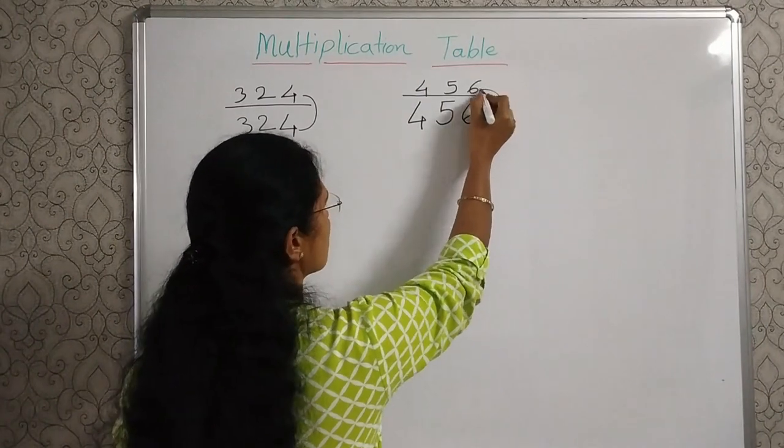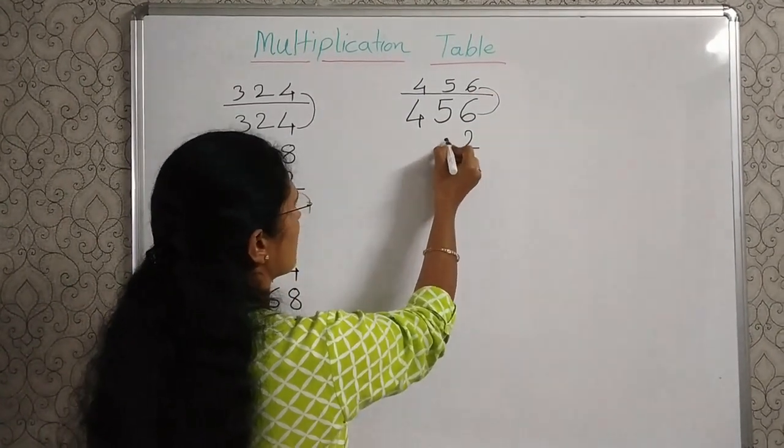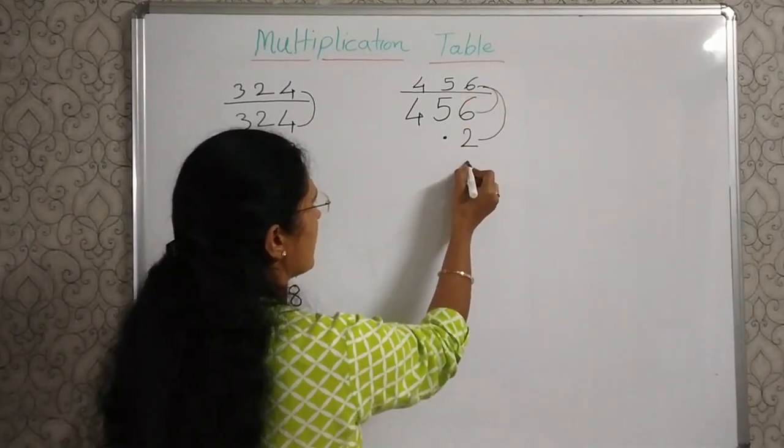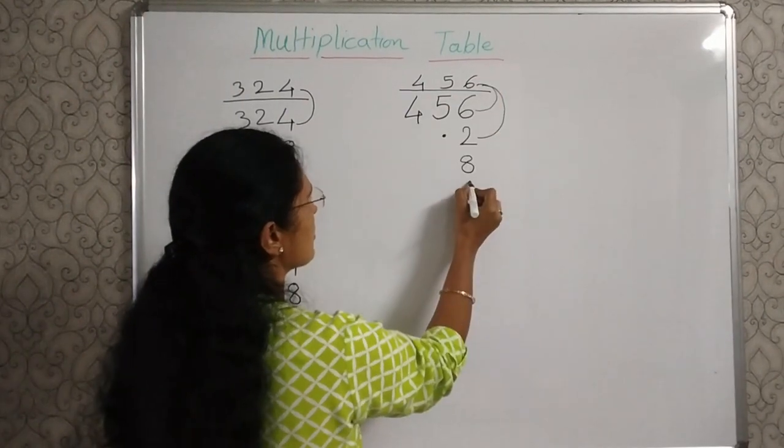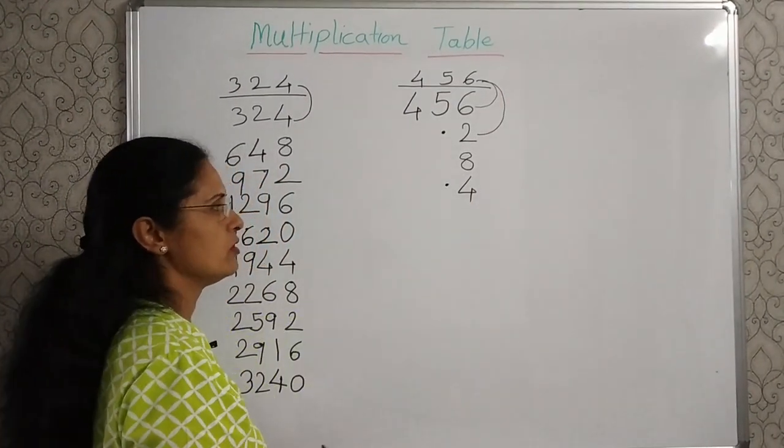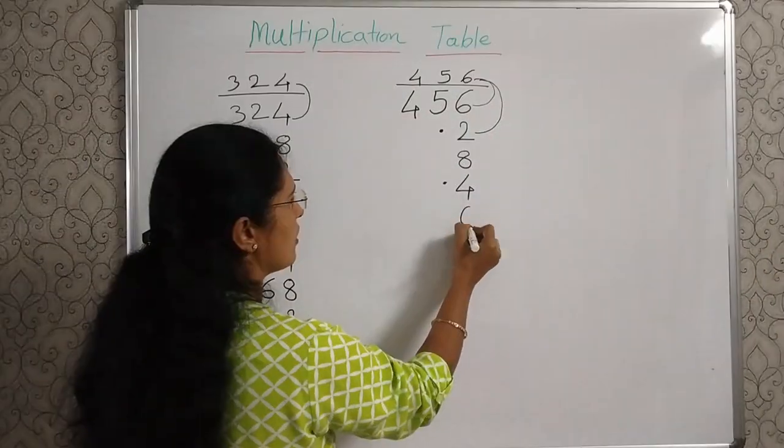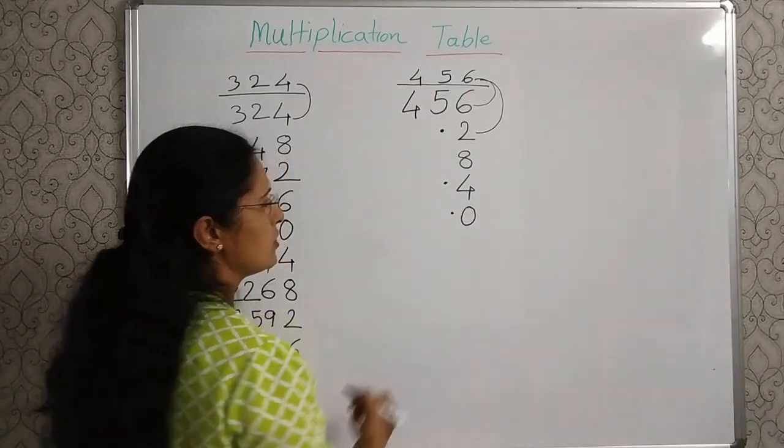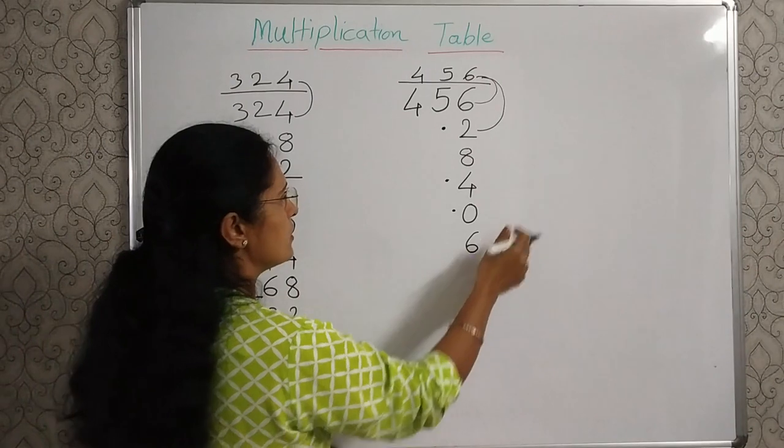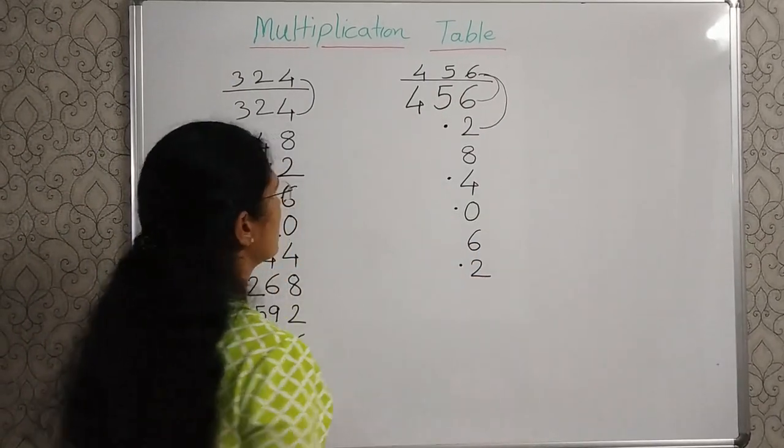6 plus 6, 12. 2 here, carry over 1. 2 plus 6, 8. 8 plus 6, 14. So dot here for the carryover. 4 plus 6, 10. Again a dot. 0 plus 6, 6. 6 plus 6, 12. A dot here. 2 plus 6, 8.